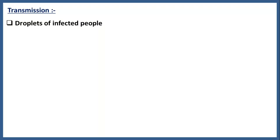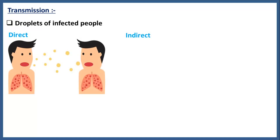The major transmission method of the virus is by contaminated droplets of an infected person. Transmission can be either direct or indirect. In the direct method, when an infected person coughs or sneezes, contaminated droplets can enter directly into the respiratory tract of a healthy person nearby and cause disease.